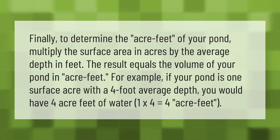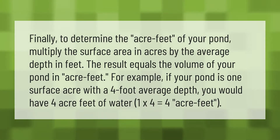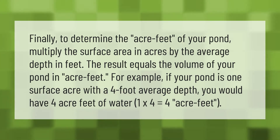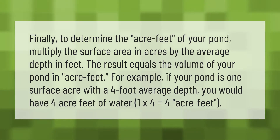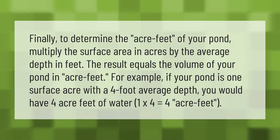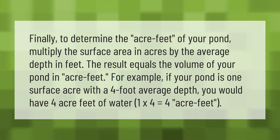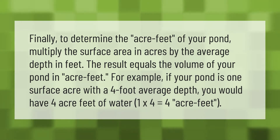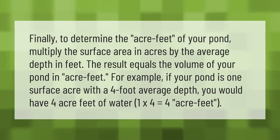To determine the acre-feet of your pond, multiply the surface area in acres by the average depth in feet. The result equals the volume of your pond in acre-feet. For example, if your pond is one surface acre with a four-foot average depth, you would have four acre-feet of water — one times four equals four acre-feet.